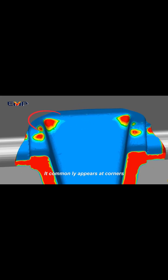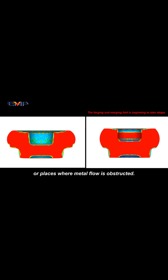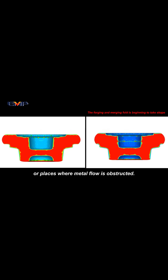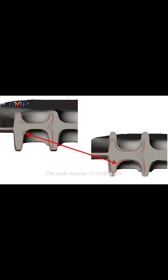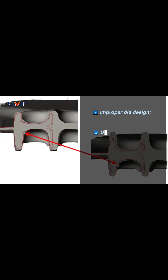It commonly appears at corners, parting lines, or places where metal flow is obstructed. The main causes of folding are: 1. Improper die design; 2. Uneven heating or excessive deformation speed; 3. Unclean billet surface.